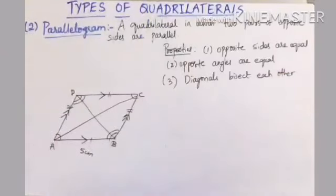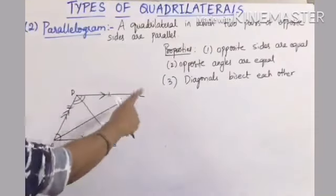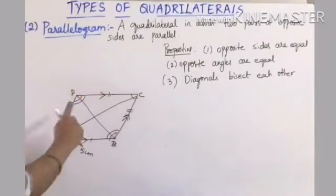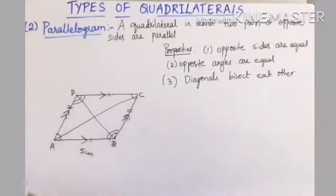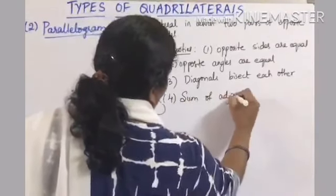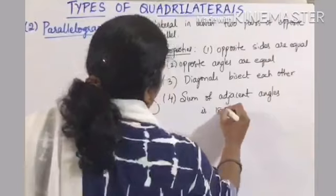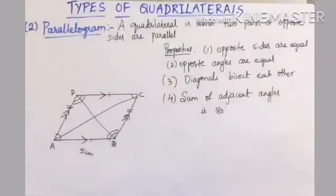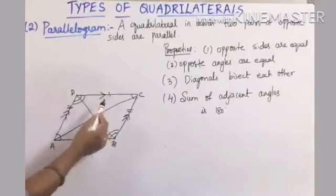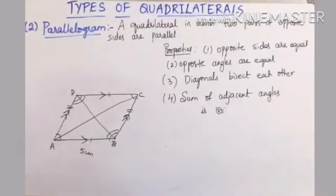Fourth property of a parallelogram: the sum of adjacent angles is supplementary, i.e., 180 degrees. So angle A plus angle B equals 180, angle B plus angle C equals 180, angle C plus angle D equals 180, and angle D plus angle A equals 180.